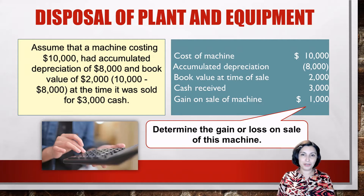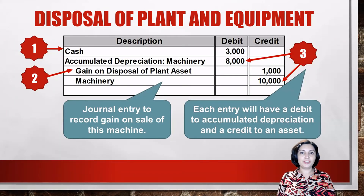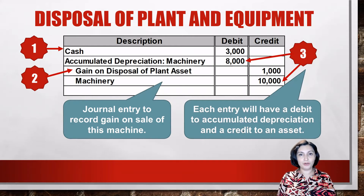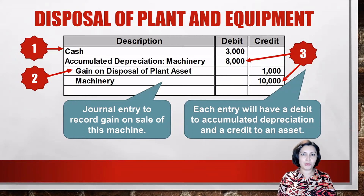Now let's look at the entry to record the sale of the asset. To record the disposal of the machine, we debit cash for $3,000, debit accumulated depreciation on the machine for $8,000, credit gain on disposal of plant asset for $1,000, and credit machinery for $10,000. Whenever we dispose of a depreciable asset, the entry to record the disposal will always have a debit to accumulated depreciation and a credit to the asset.